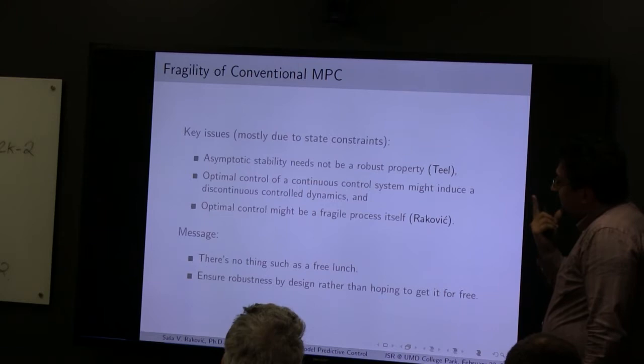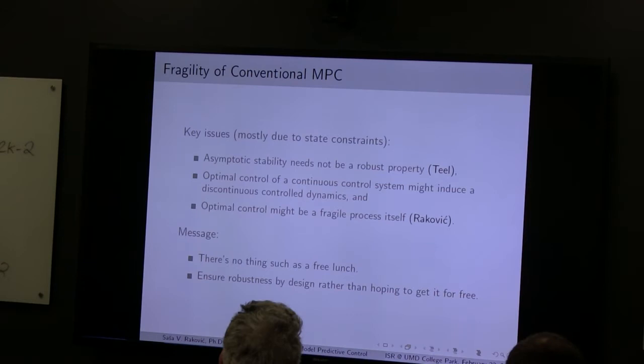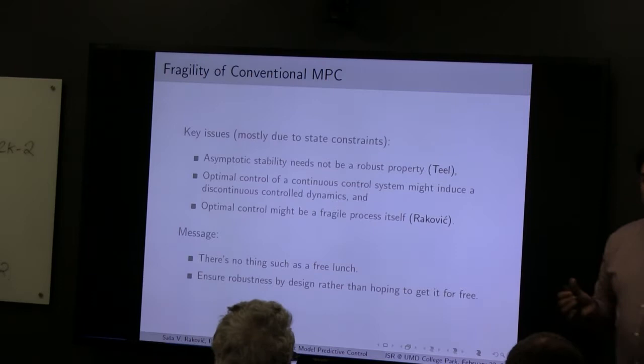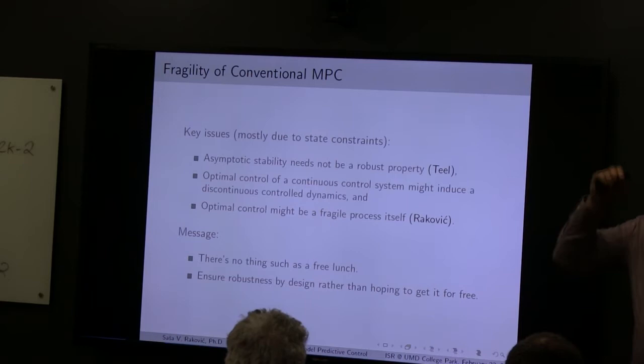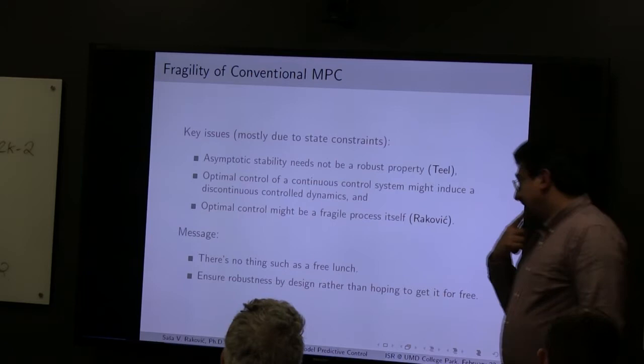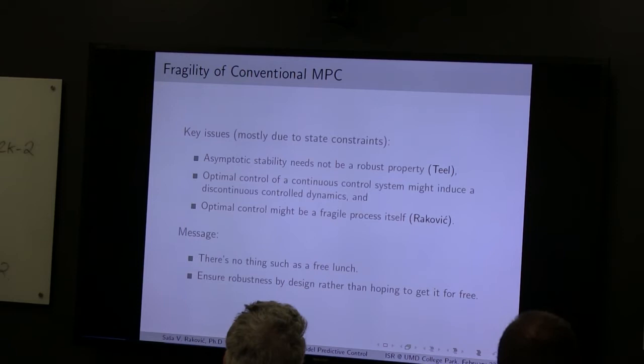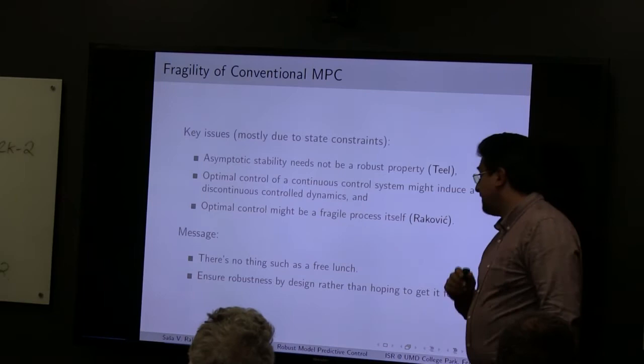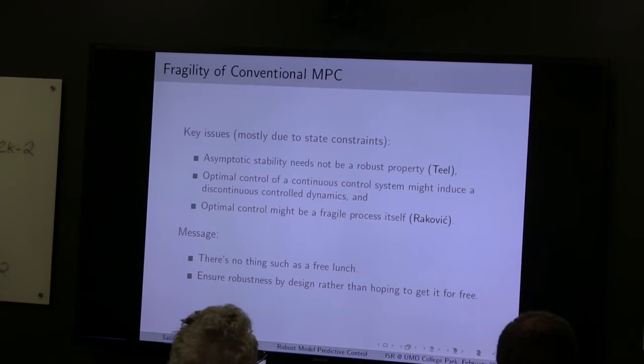The situation is actually a bit worse than that. When you look at optimal control of a continuous-time system, you may get a discontinuous control policy — this might be very bad for robustness, as jumps can cause large variations in trajectories. And finally, because of state constraints, the optimization can result in discontinuities in the value function: arbitrarily small changes in input data can cause huge changes in the value function and domain of attraction. Ultimately, there is no such thing as a free lunch — if you want robustness, you better make sure you design things to be robust.